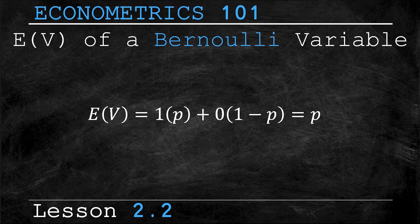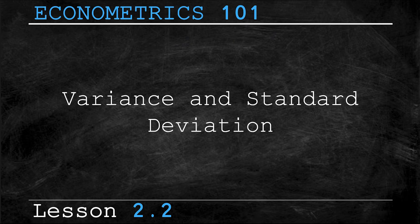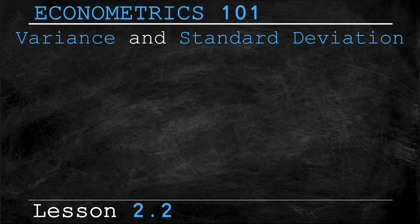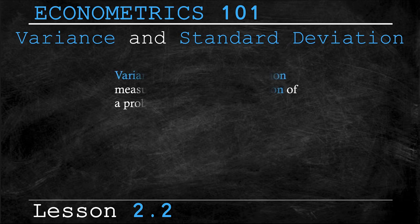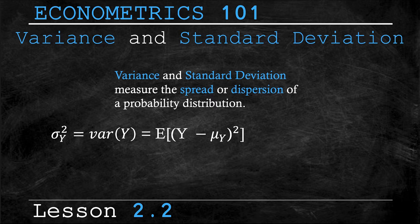Now we're going to look at two important factors of a probability distribution, and those are variance and standard deviation. Variance and standard deviation measure the spread or dispersion of a probability distribution. The variance of a random variable is denoted as σ²(Y), where simply variance of Y is equal to the expected value of the square of the deviation from Y from its mean. Sounds super confusing, right? Well, let's break it down. Not all outcomes will be exactly equal to the mean or average. Some will be higher than the average, and some will be lower.